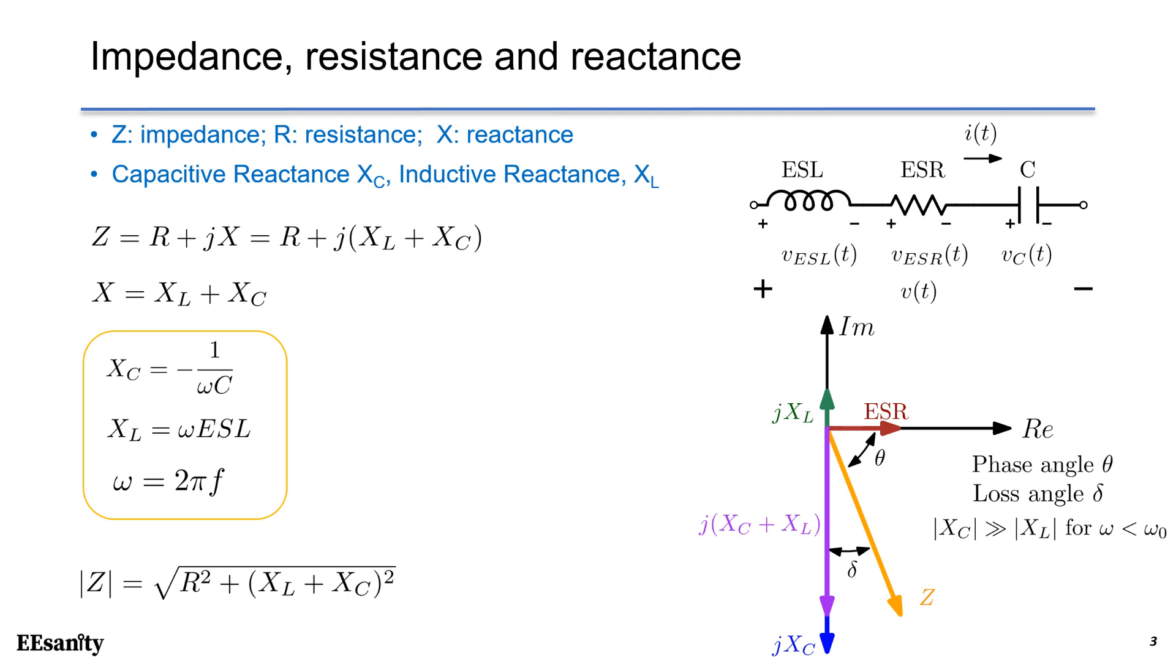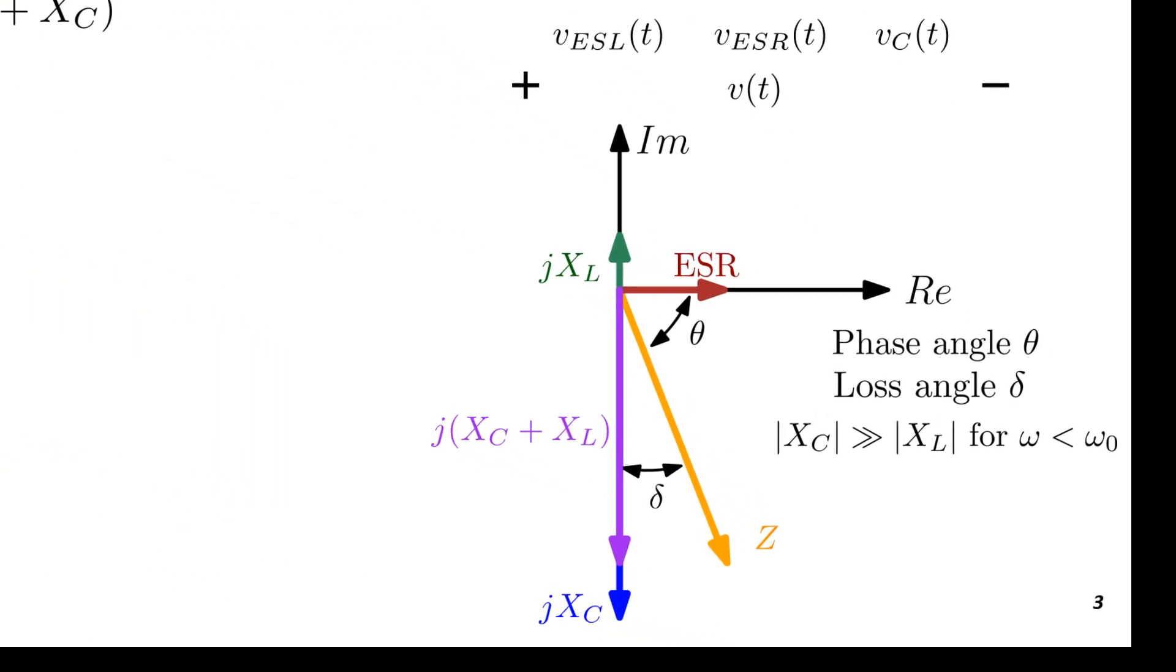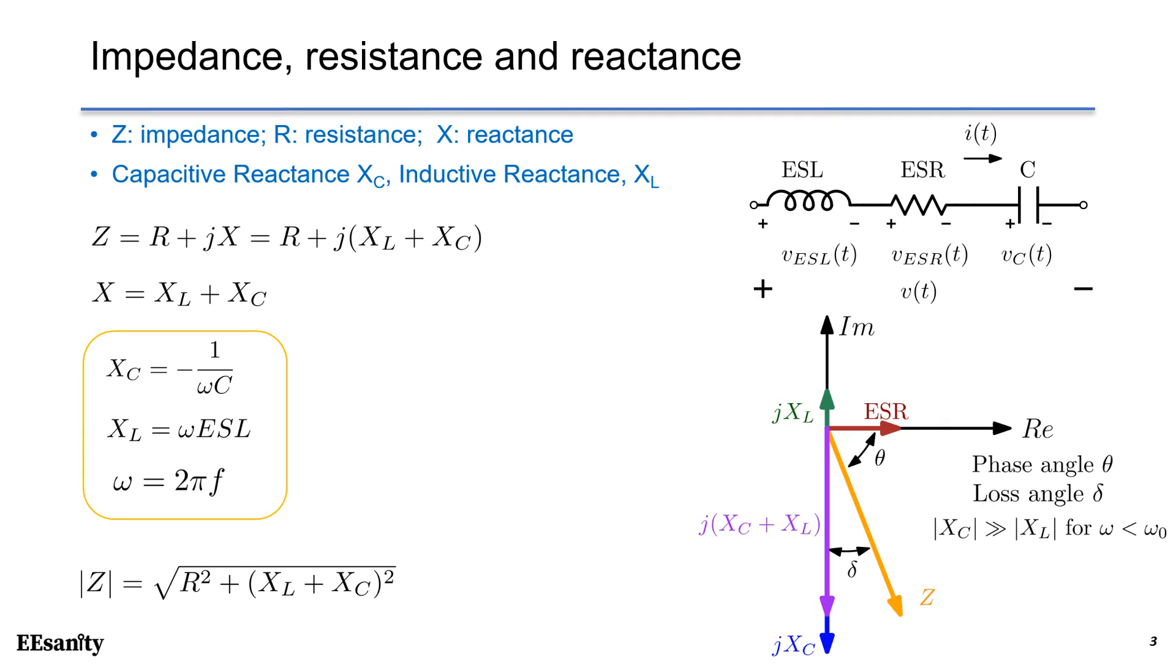Therefore, the total reactance is X equals to XL plus Xc. Note that Xc is negative. On the right-hand side, we can express all the impedance, reactance, resistance in the complex plane. Based on this diagram, we can define more parameters.